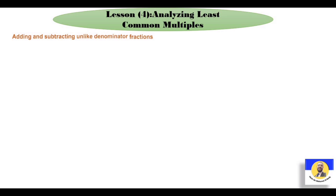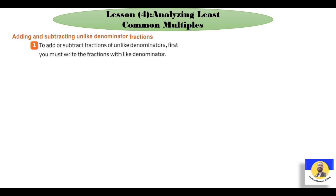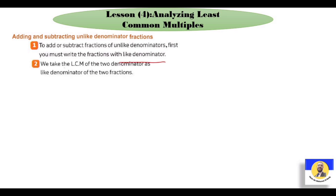أول حاجة: how can we make adding and subtracting unlike denominator fractions? لو أنا معي two fractions unlike terms - يعني two numbers مش زي بعض في الـ denominator. هنعمل فيهم إيه؟ لازم الأول نخليهم same denominator. فمن ضمن الحاجات اللي بتحل مشكلة الـ same denominator هي الـ Least Common Multiple. يبقى first you must write the fraction with like denominator. After that we take the LCM of the two denominators as the like denominator of the two fractions.